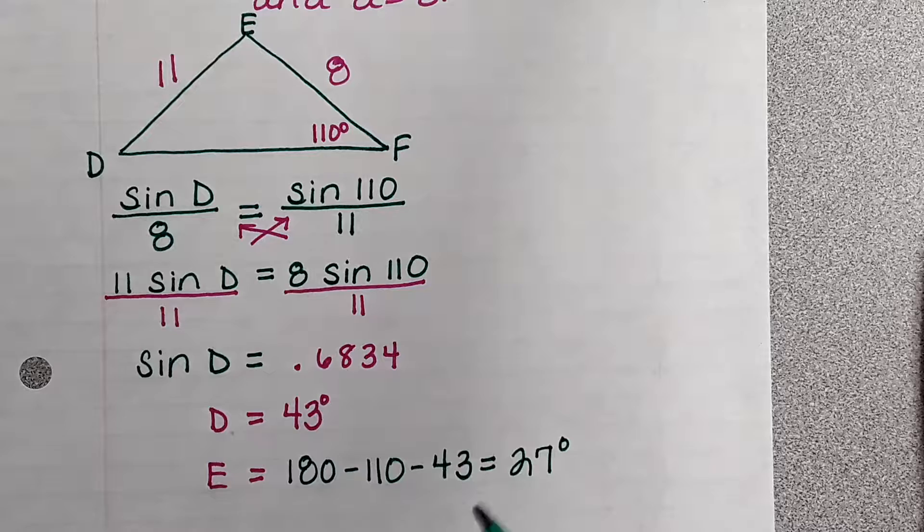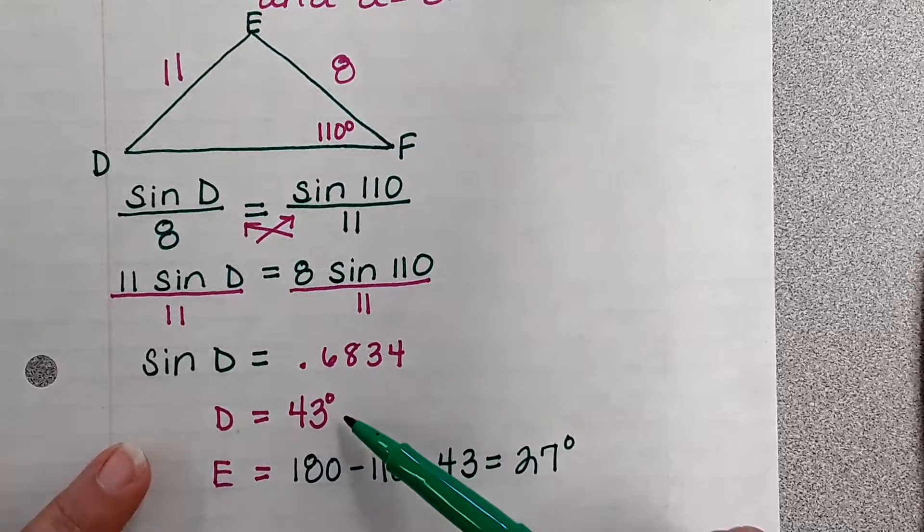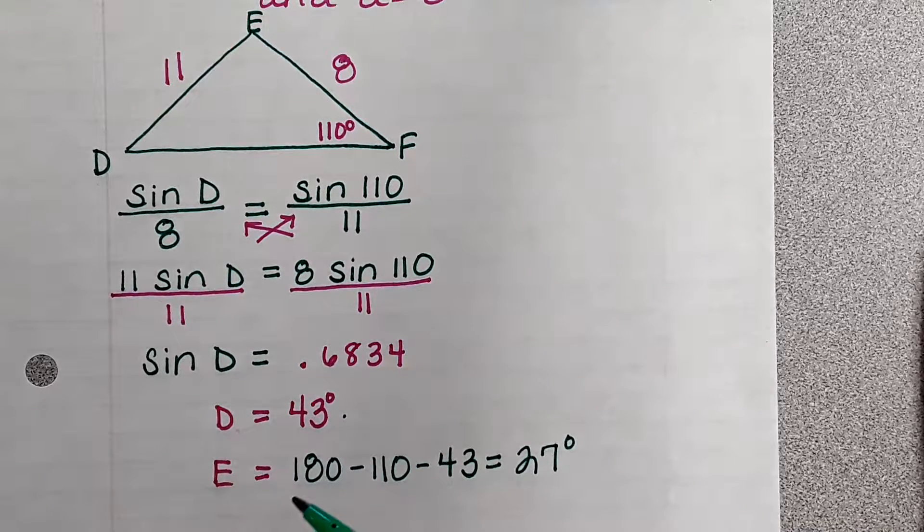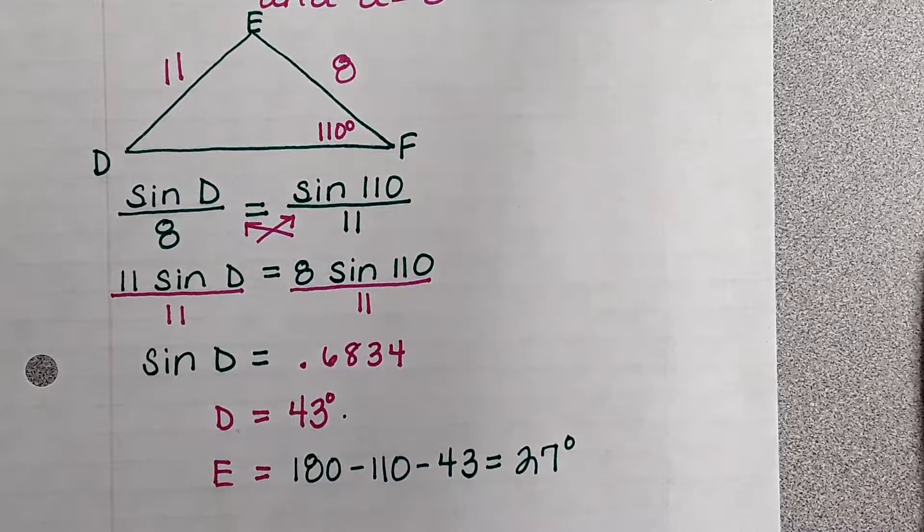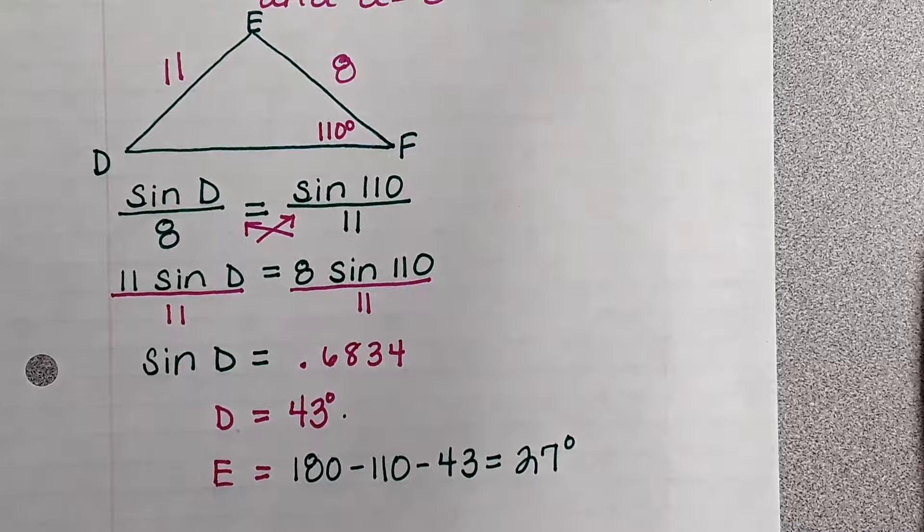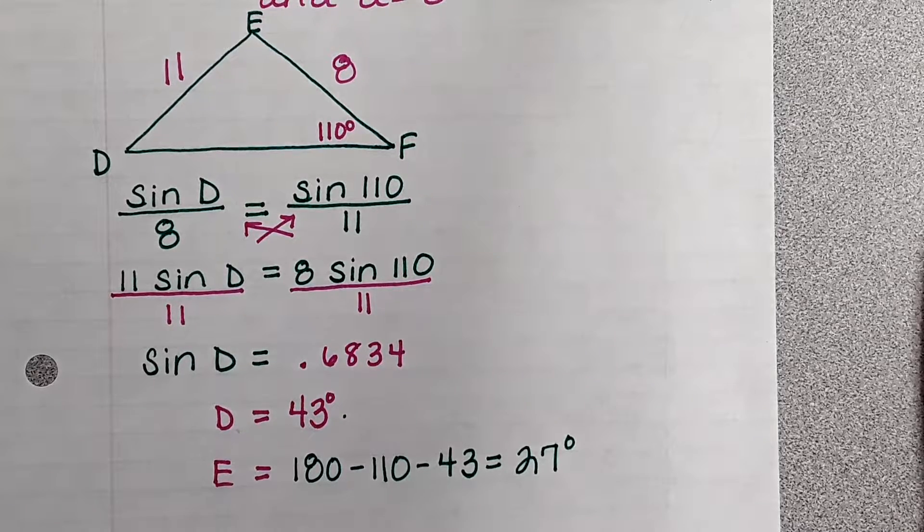So I use the law of sines to find my missing angle, and when you're finding a missing angle, the last thing that you have to do is the second sine. Then when I had to go find angle E, I no longer have to use the law of sines because I know two angles and all the angles in a triangle add up to 180.